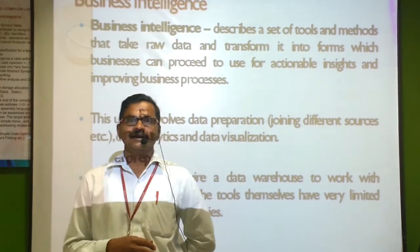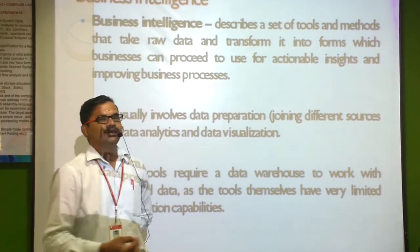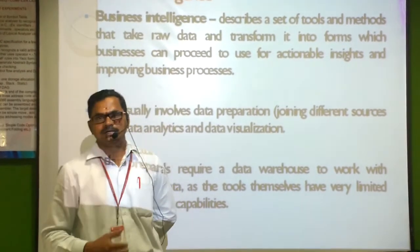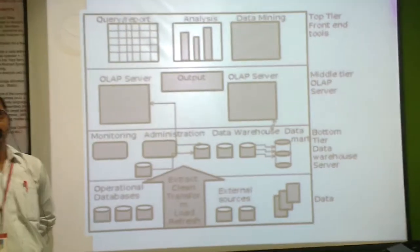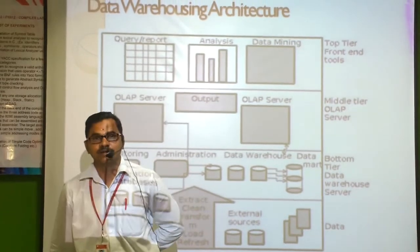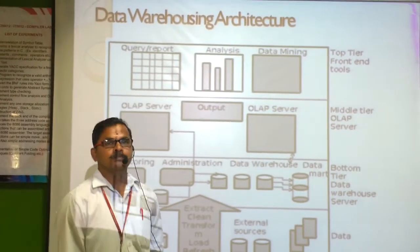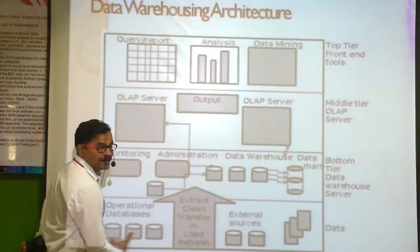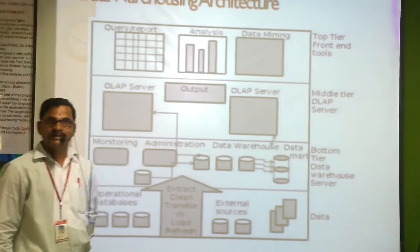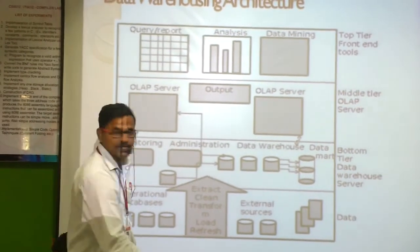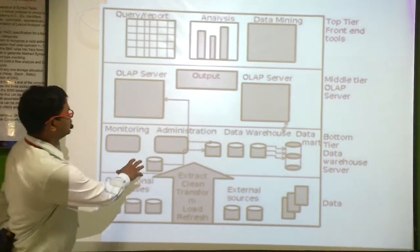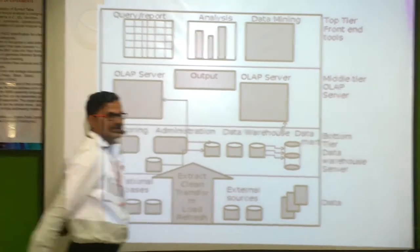What does data warehousing do? It maintains some architecture. This is the architecture of data warehousing. Unlike other technologies which use a top-to-bottom approach, data warehousing uses a bottom-to-top approach. At the bottom, we have collected data sources — relational databases, flat files, or external sources such as Excel, Notepad. From here, we extract and integrate all data. After that, we send it to the processing stage where monitoring, administration, data warehousing, and data marts are performed. Data mart is a single individual system.